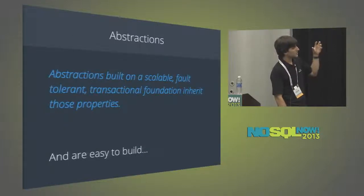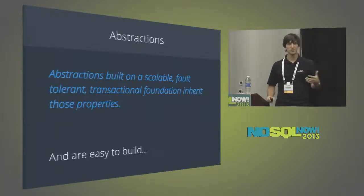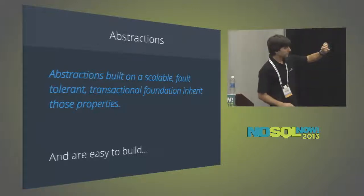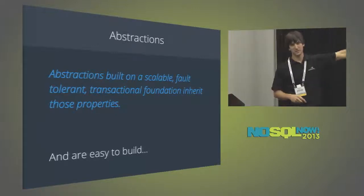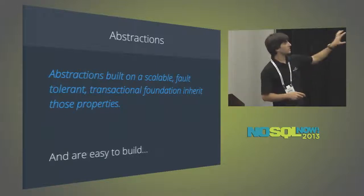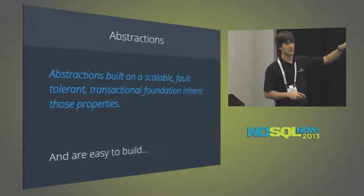If you build an abstraction on top of a scalable, fault-tolerant, transactional foundation, it gets to inherit those properties. If you take away scalability, you still get to build a transaction that inherits fault tolerance. If you take away fault tolerance, you still get to build an abstraction that handles scalability. Those properties you can add and subtract one by one. But if you take away transactions and ACID, it takes away your ability to build the abstraction itself and the whole thing evaporates.